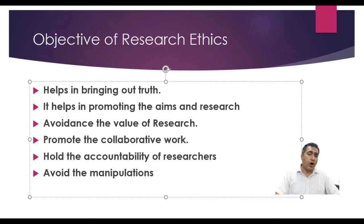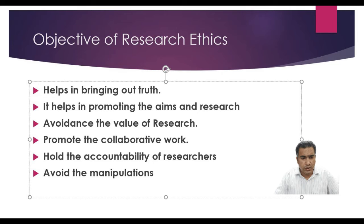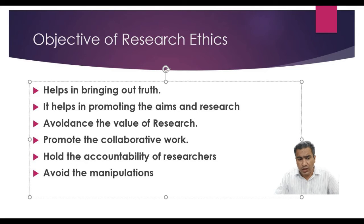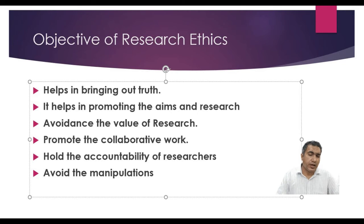The next objective is to avoid manipulation. Some researchers follow fabrication and falsification methods — they take scripts from multiple researchers and manipulate the text with paraphrasing. If we follow ethical principles, it helps to protect and avoid manipulation in research. It provides the quality of research in the area of social sciences and technology, producing a quality product and quality research.